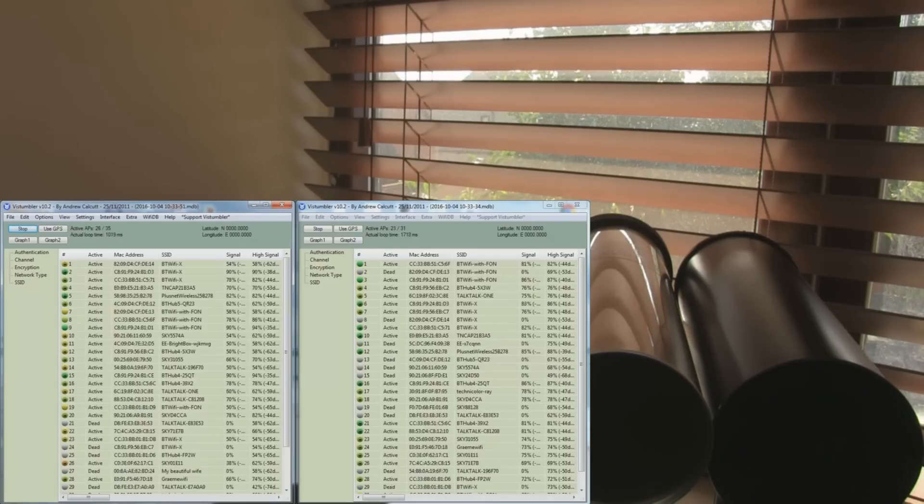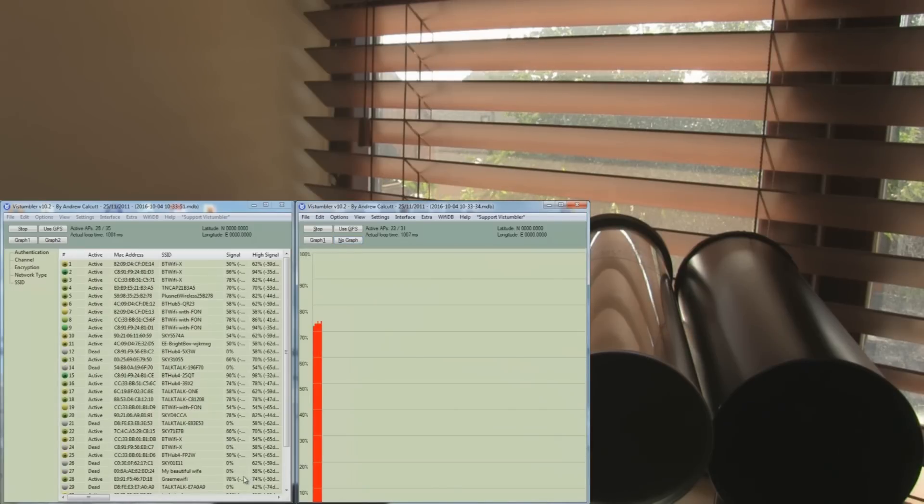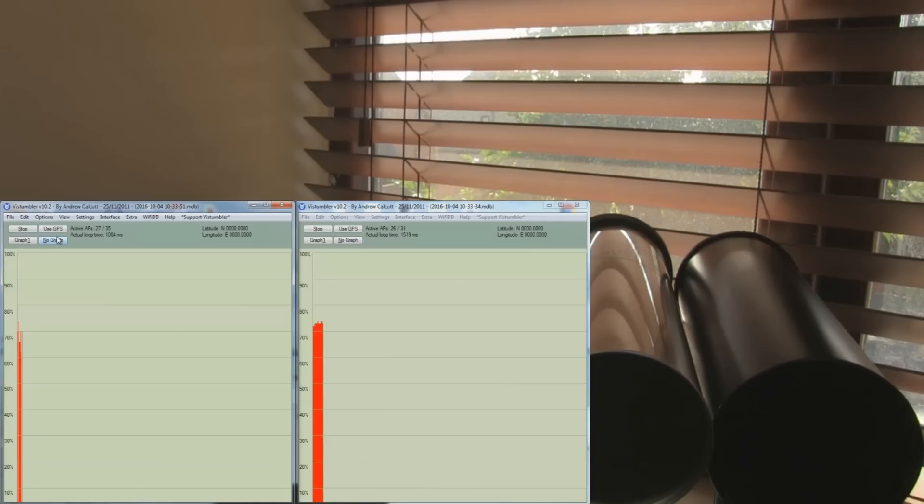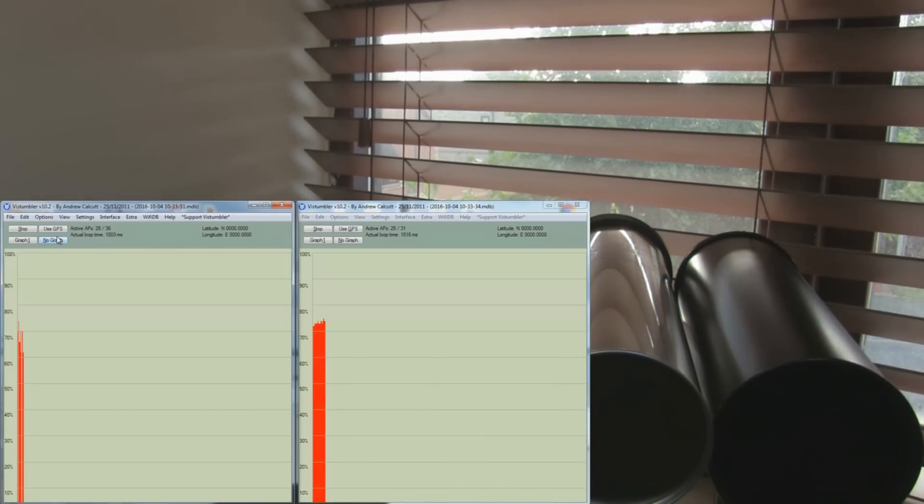I'm going to pick a couple of identical access points and show them on the graph so we can see how well each performs. Very similar then. The Turbo Tenner is a little bit weaker, it's dropped out a couple of times and is hovering around the 65 percent mark, where mine is solid, just over the 70 percent mark.